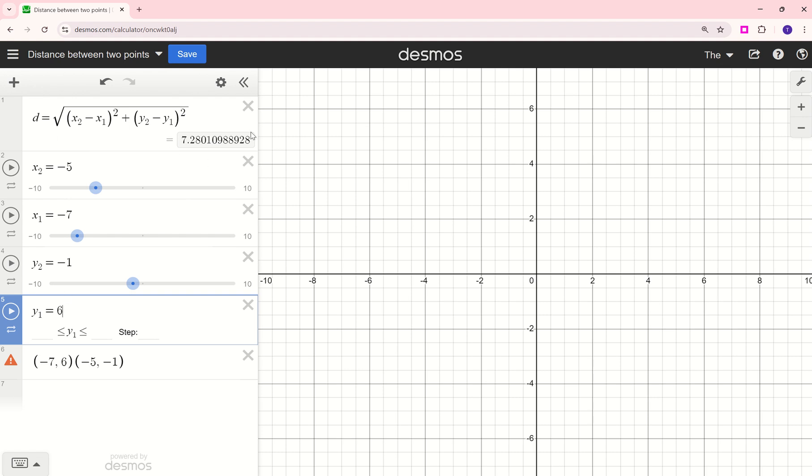Well, you see that once I have a value for all of these, the distance formula calculates for me. And in this case, it looks to be about 7.28 or 7 and 28 hundredths.